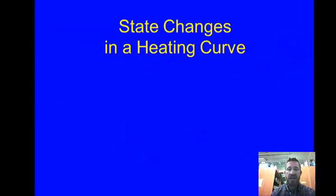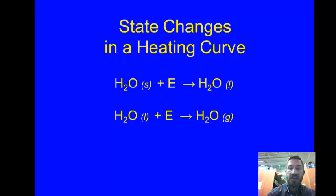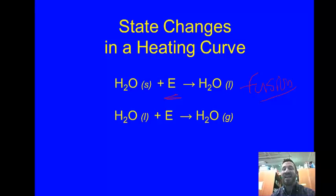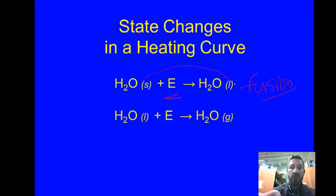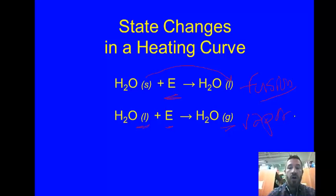In a heating curve, two things we want to note: first, we have two processes going on. The first process is fusion — F-U-S-I-O-N — which is melting. Energy is being put in, so this is an endothermic process. It requires energy to break those bonds to go from a solid to a liquid. Then we see vaporization — going from a liquid to a gas — energy is required for that too. Notice both of these processes are endothermic.